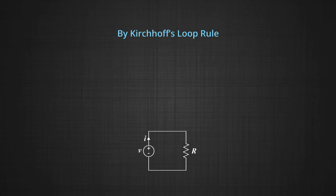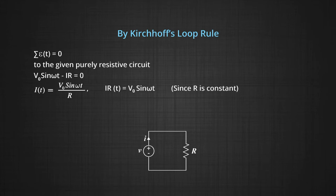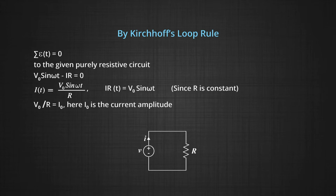Since we have a circuit with an AC source where resistance is connected in series, applying Kirchhoff's loop rule — sigma E equals zero — gives us, for a purely resistive circuit: V₀ sin(ωt) minus IR equals zero. Therefore I equals V₀ sin(ωt) divided by R, where IR equals V₀ sin(ωt). Here R is constant resistance, and V₀ divided by R equals I₀.